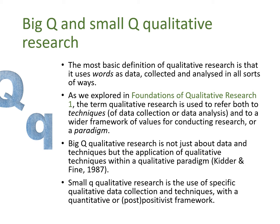Big Q qualitative has two dimensions: it's about using qualitative techniques of data collection and analysis, but within a qualitative values framework distinct to a qualitative paradigm. Some features of this qualitative paradigm sit in opposition to post-positivist quantitative research and reject the idea of the natural sciences as a model for researching psychology. Small q qualitative is about the use of qualitative techniques but within the disciplinary dominant quantitative scientific or post-positivist framework. We can think of Big Q as fully qualitative research — about both techniques and values — whereas small q is qualitative only in its use of techniques.